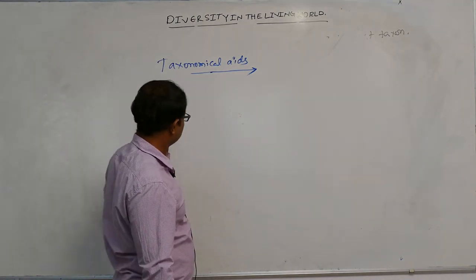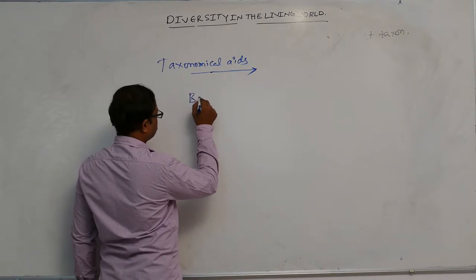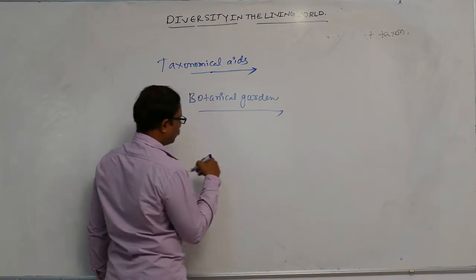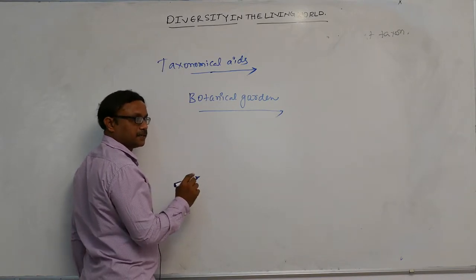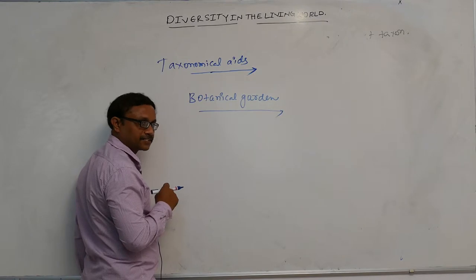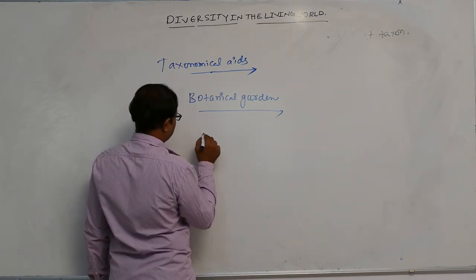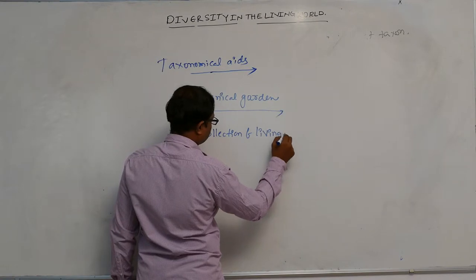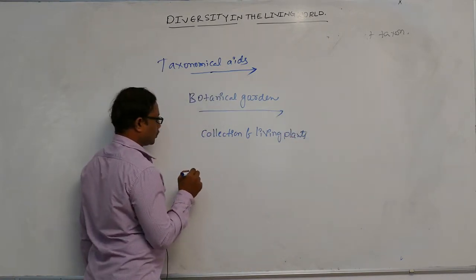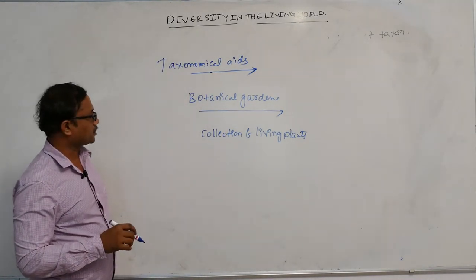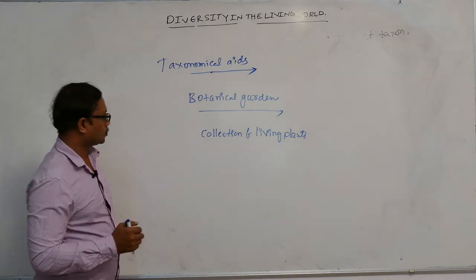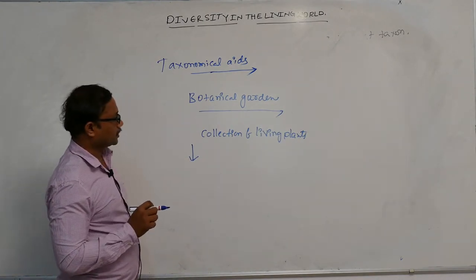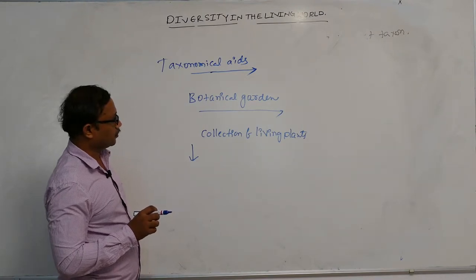Botanical gardens are gardens where living plants are grown specially for identification of plants. They represent actual collections of living plants growing in certain special places. These collections of living plants in special regions are known as botanical gardens.